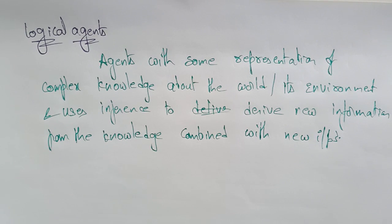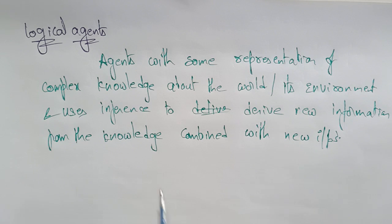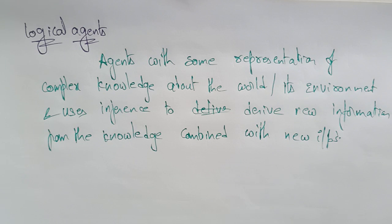A logical agent is simply an agent with some representation of complex knowledge about the world or its environment, and it uses inference to derive new information from the knowledge combined with new inputs. The key issues in logical agents are the representation of knowledge and reasoning. The logical agent is completely based on the knowledge base.